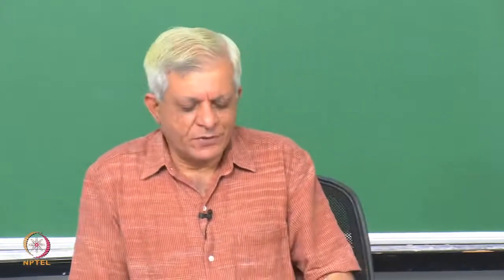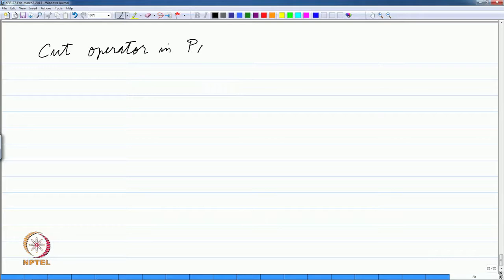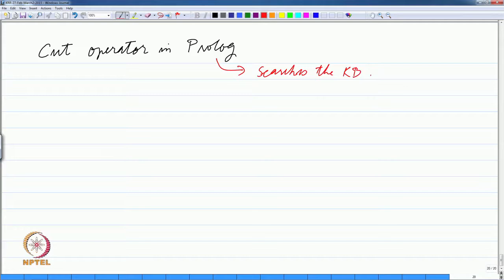We are looking at logic programming and Prolog, and in particular we were looking at the cut operator in Prolog. What the cut operator does is that it exploits the fact that Prolog searches the knowledge base in a depth-first fashion — top to down in the clauses that we have written, and if we have a set of goals to solve, then left to right.